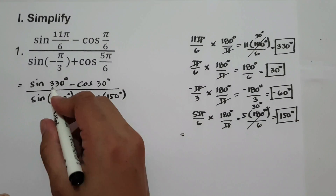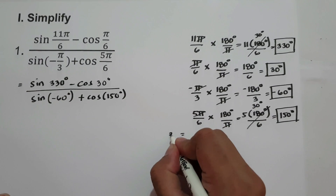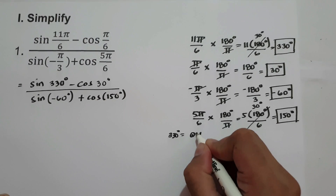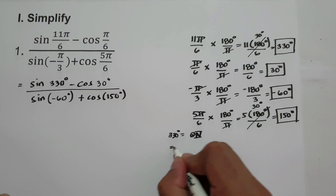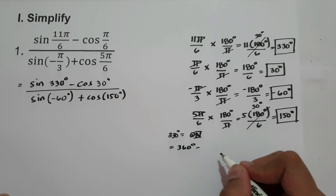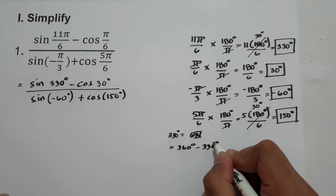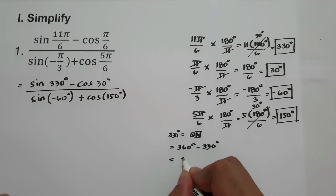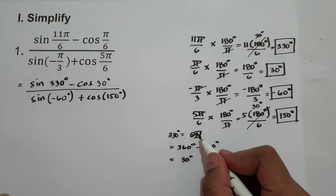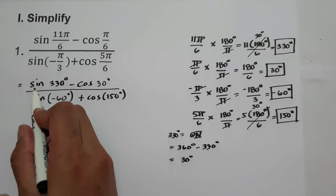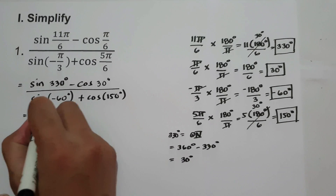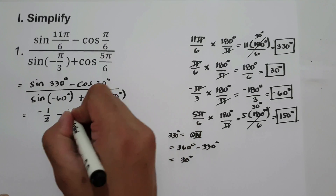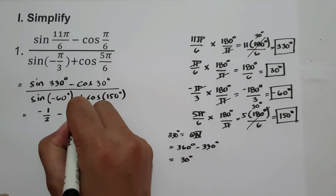Now let us find the reference angle of 330 degrees. 330 degrees is located in quadrant 4. The reference angle in quadrant 4 is 360 degrees minus the given angle, so 360 minus 330 equals 30 degrees. Since sine in quadrant 4 is negative, sine 330 degrees equals negative 1/2. And cosine 30 degrees in quadrant 1 is square root of 3 over 2.